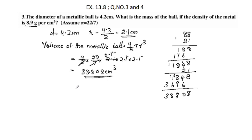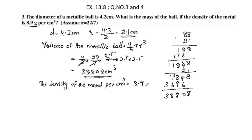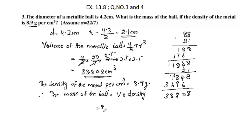Now we find the mass. The mass is equal to volume into density. The density of the metal is 8.9 grams per centimeter cube. Therefore, the mass of the ball is equal to volume into density: 38.808 into 8.9.